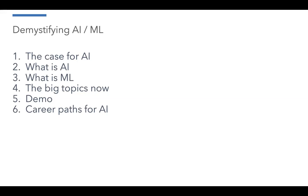I'm going to start by painting a picture for why AI is needed and why it's so important. I'll get into the specifics of what is AI, what is ML, and give you an overview of what are the hot topics right now. We'll do a little bit of a demonstration, and I'm still figuring out the best way to do it without making it too intimidating with code. And lastly, I'll talk about some career paths for AI — this will be at a high level, not really at the specific lower levels.